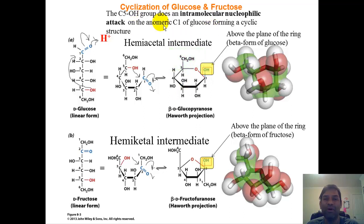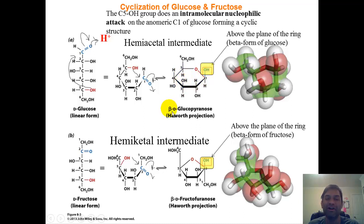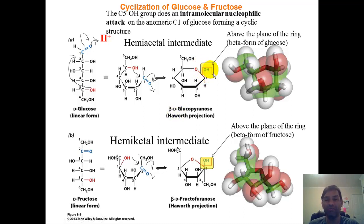You can have beta-D-glucose, alpha-D-glucose, beta-L-glucose, or alpha-L-glucose, depending on where the anomeric OH is (above or below the ring) and where the CH2OH is attached on the carbon that determines stereochemistry (above or below). Remember, that substituent determines D vs. L stereochemistry.